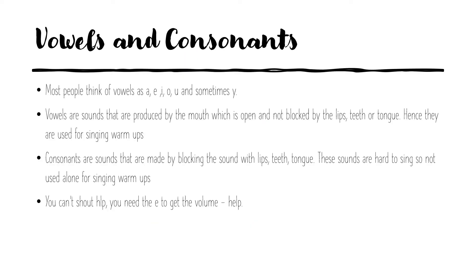So let's think about vowels and consonants. When I ask you what's a vowel, you're probably going to say A, E, I, O, U and sometimes Y. The vowels are the sounds which are made by your mouth when it's open and not blocked by the teeth or the lips or the tongue. So we use them for warm-up and singing using A, A, A, E, I — because you can stretch them out and those sounds can be produced for a long time. Consonants, obviously, are the opposite of that — their sounds are made by blocking the sound.